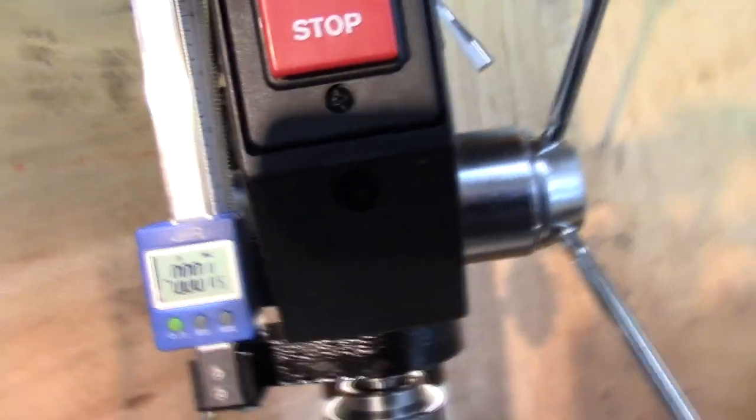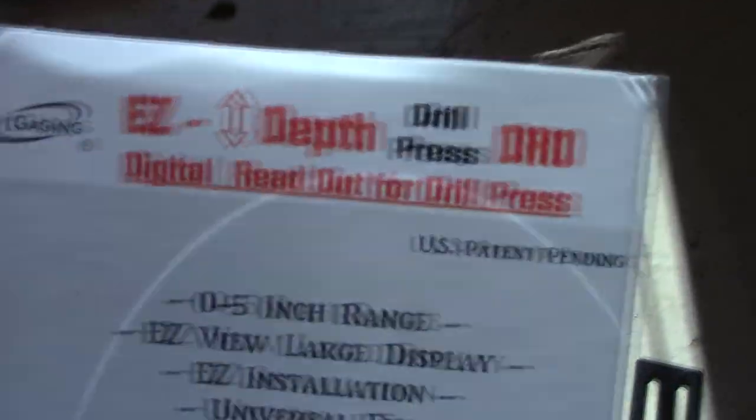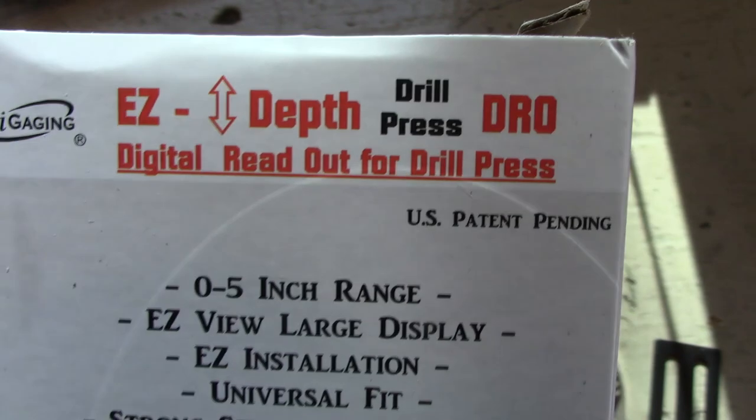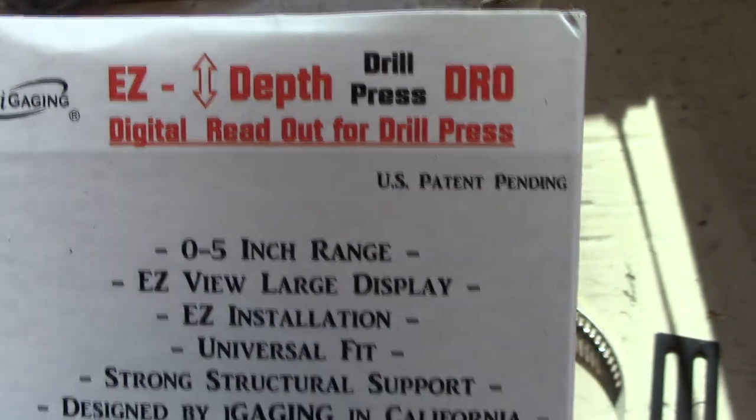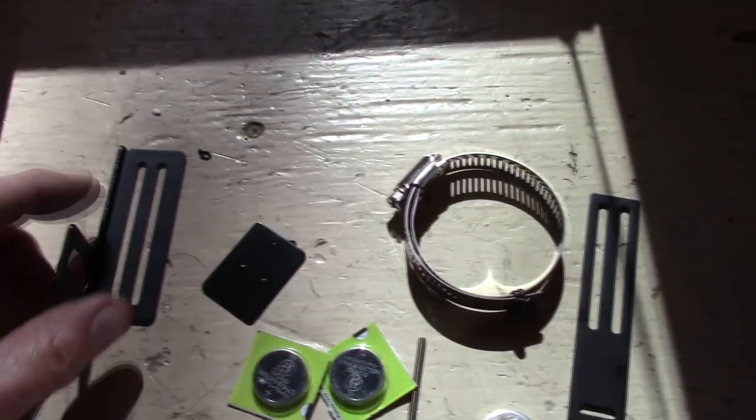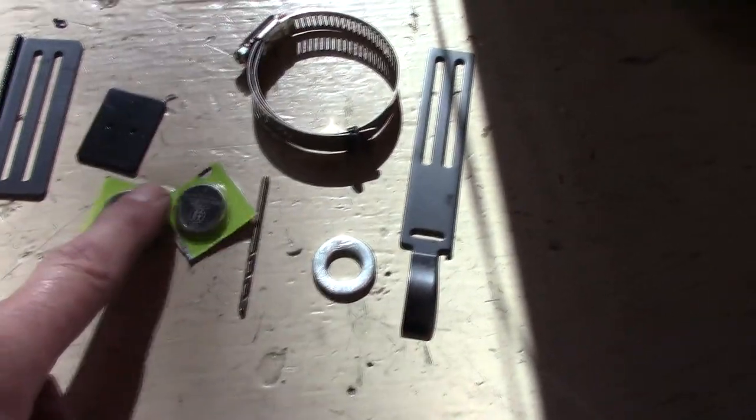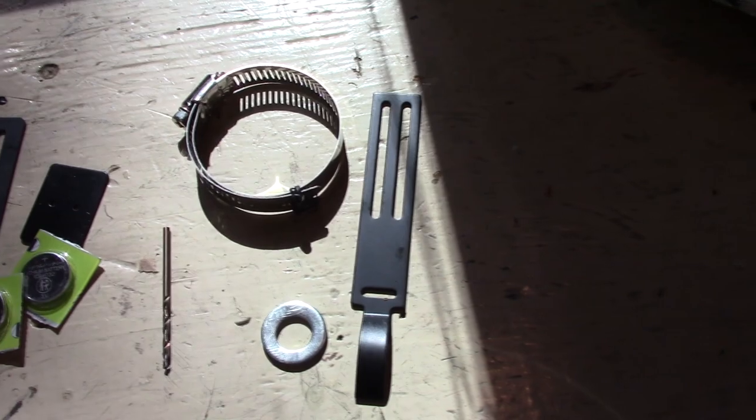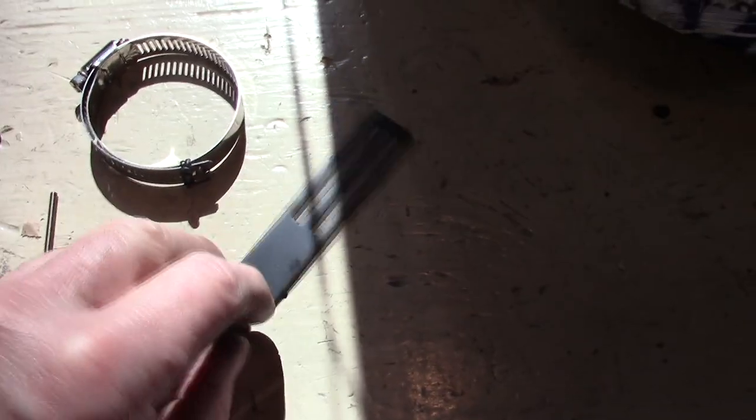Here is the box here, so it tells you it's iGaging and you can freeze the image here if you like to read this. They do provide you with all the brackets you need, two extra batteries, a drill, a tap—I threw in my box already—another bracket, and a bunch of hardware.